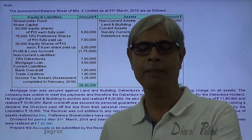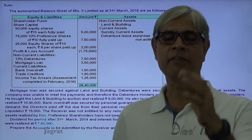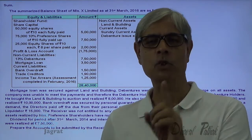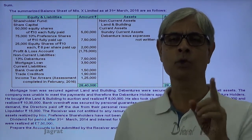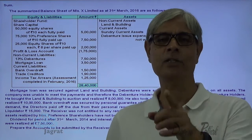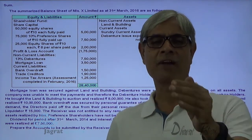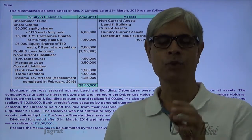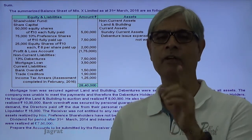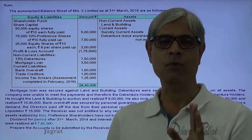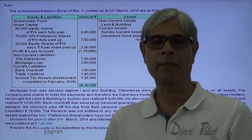The receiver is appointed by the debenture holder. The receiver will realize the assets and is required to make payments as prescribed in law. First he has to pay the fully secured creditors, then the receiver's remuneration, then preferential creditors, and after that the debenture holders who are having a floating charge over the assets will be paid along with their outstanding interest.